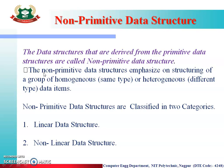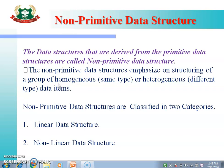For example, if we talk about an array, we build an array using the integer data type. So integer is our primitive data type, which is also a primitive data structure, and array is our non-primitive data structure, because it is made up from the primitive data structure. Non-primitive data structures emphasize structuring of a group of homogeneous (same type) or heterogeneous (different type) data elements. For example, a structure is a collection of dissimilar type of elements — that comes under the non-primitive type. Non-primitive data structures are classified into two categories: linear and non-linear.